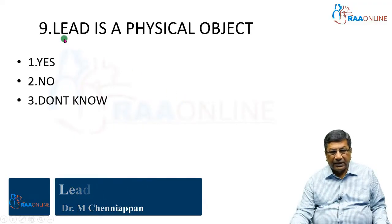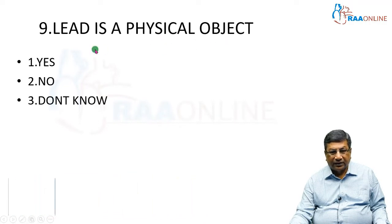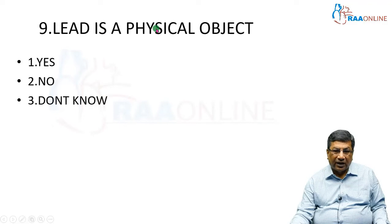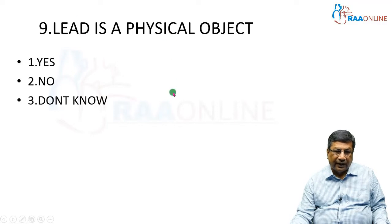First question: is a lead a physical object? Yes, no, or don't know? The right answer is that the lead is not a physical object. An electrode is different from a lead. A lead is an imagined line through which you are measuring the electrical activity of the heart. So the answer is no — it is an imaginary line.